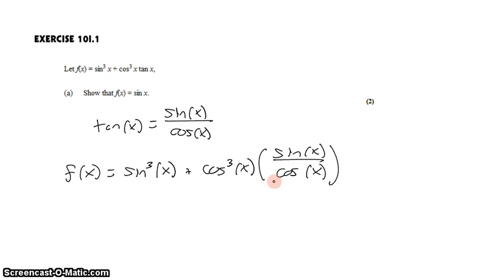Writing it that way makes it clear that the cosine will cancel with one of these three cosines. Remember cosine cubed means cosine times cosine times cosine. So I'll cancel with one of them, leaving cosine squared. This gives me sine cubed of x plus cosine squared of x times sine of x.